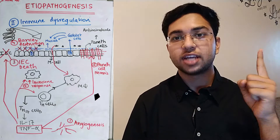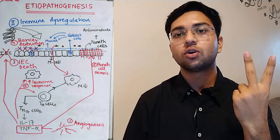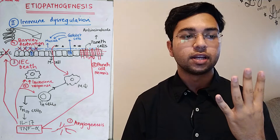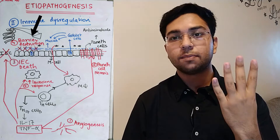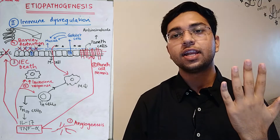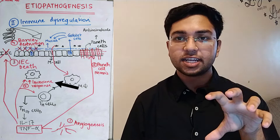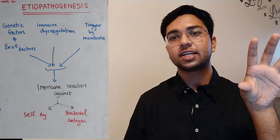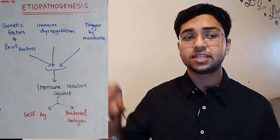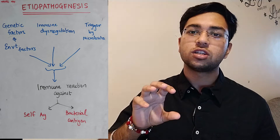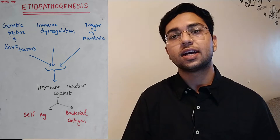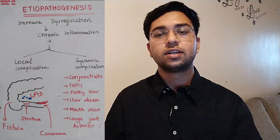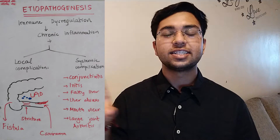TNF-alpha has five roles: first, it promotes angiogenesis; second, it leads to Paneth cell necrosis; third, it leads to intestinal epithelial cell death; fourth, it leads to disruption of the barrier function; and fifth, it leads to an exaggerated immune response. So if genetic factors, environmental factors, immune dysregulation, and microbial triggers are all present, it will lead to immune reaction against self antigen as well as the bacterial antigen, leading to local and systemic complications.